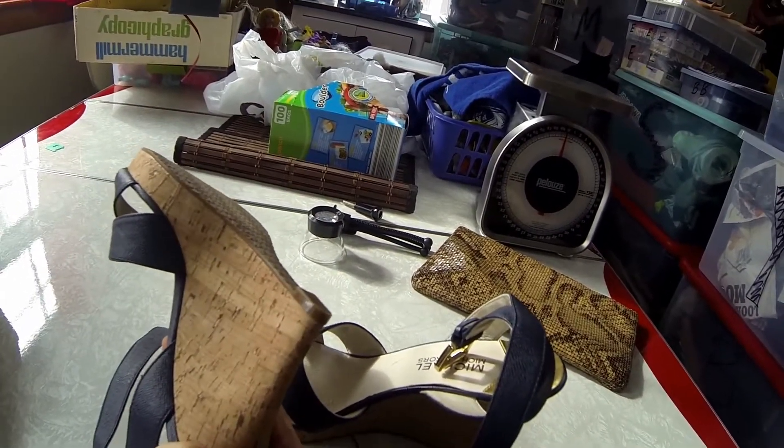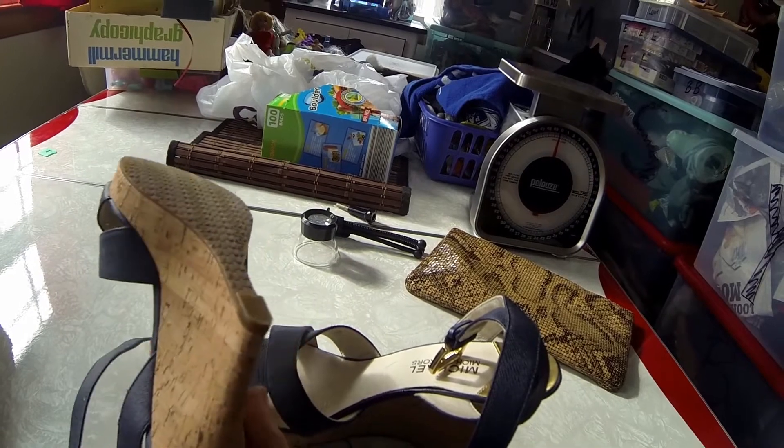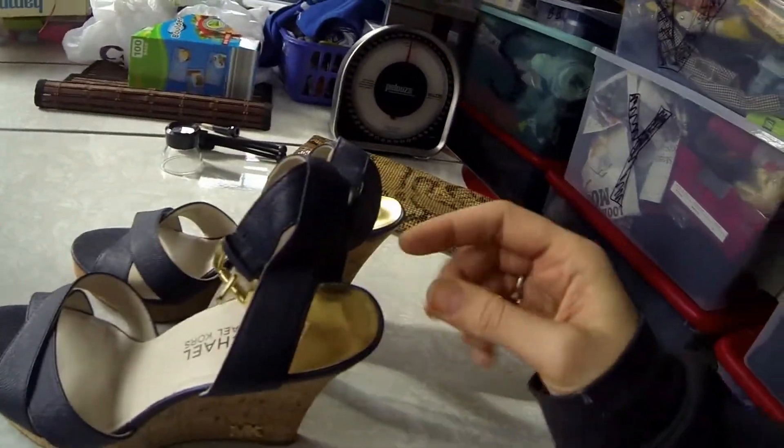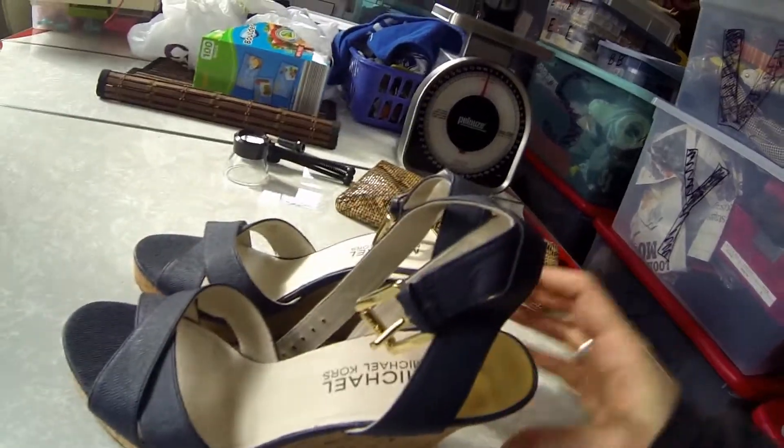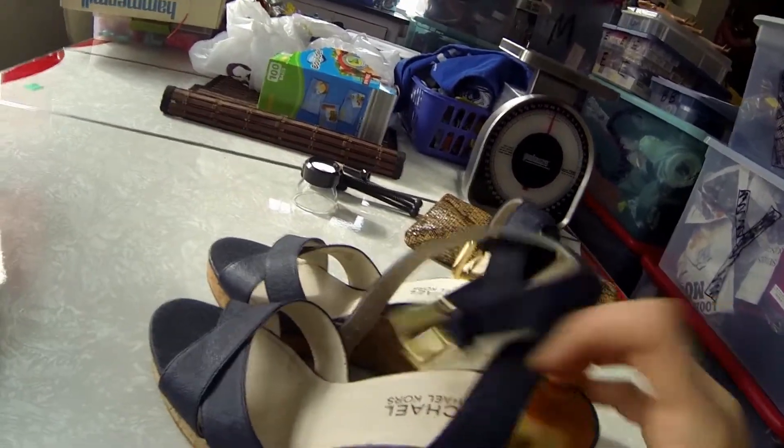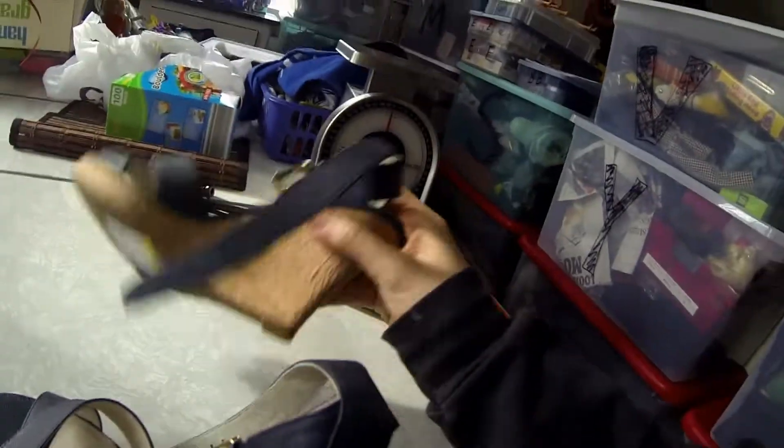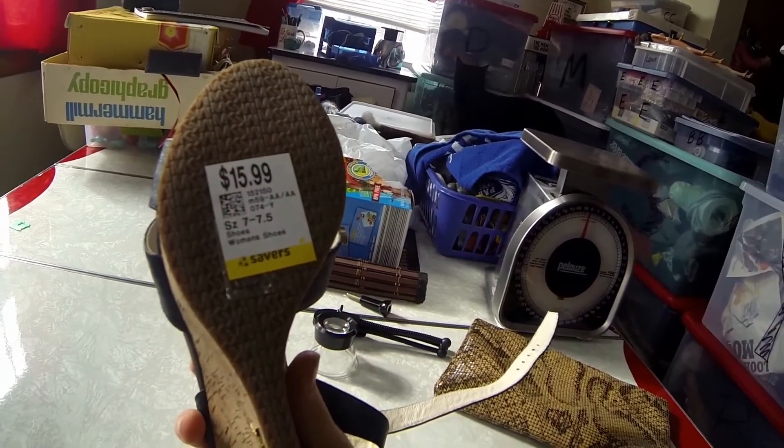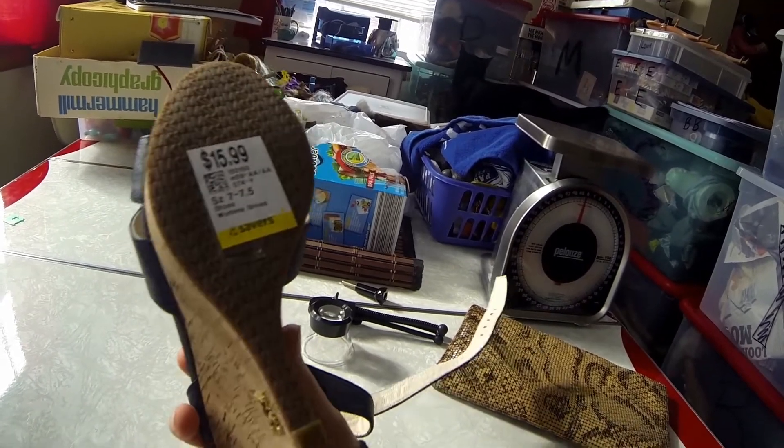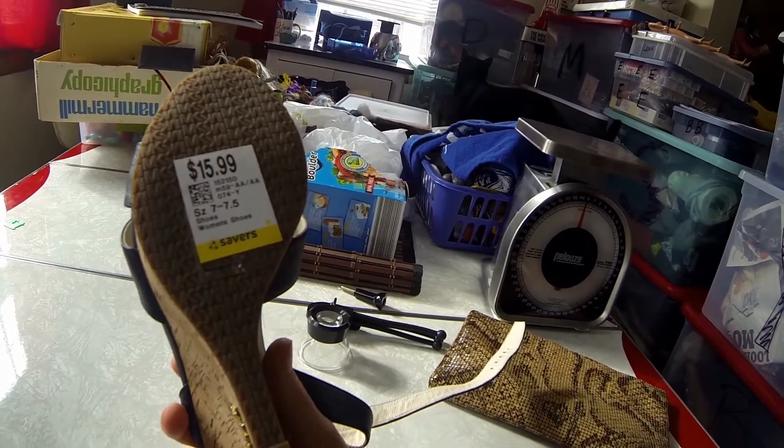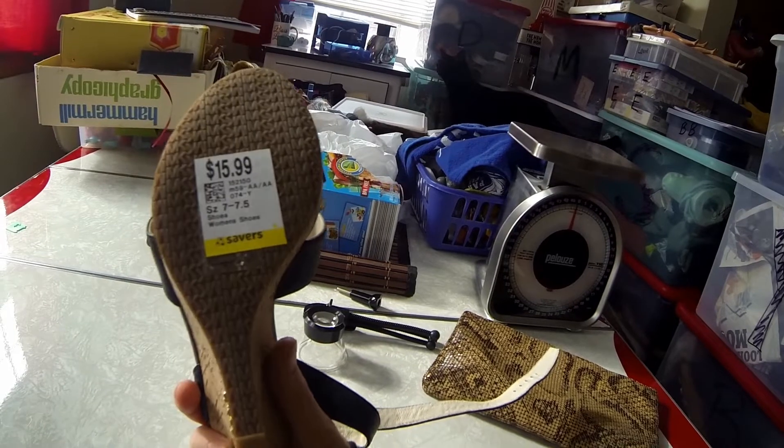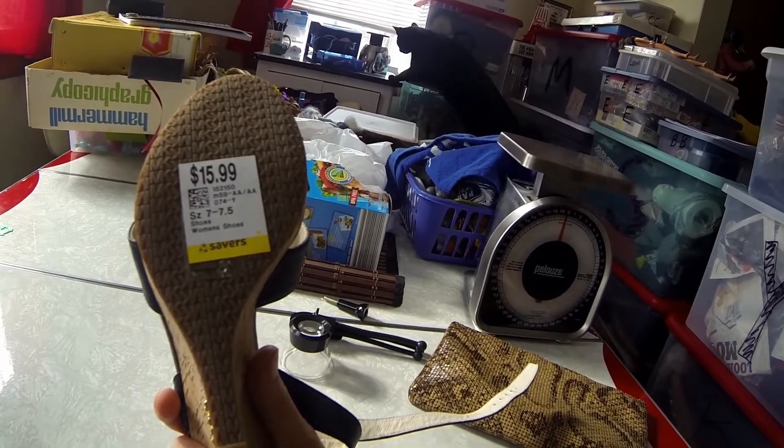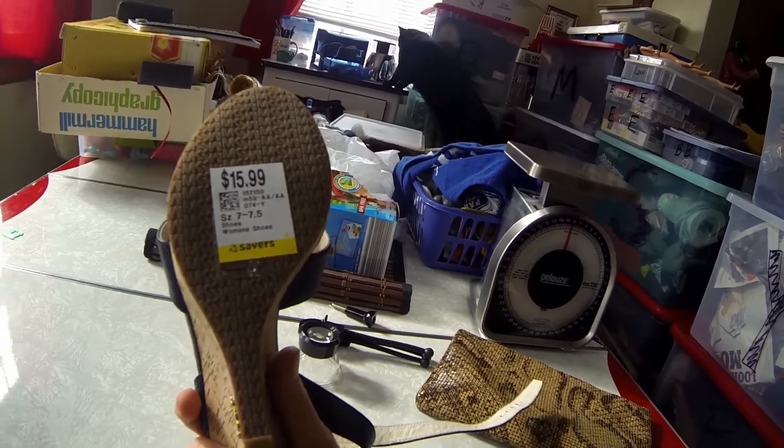So I think when I go to list them, I'll state that they're new without the box or new without the tags. However eBay words that or however Poshmark does it. But these were, I paid 50% off of $15.99. So that's like $16. So I paid about $8 for these. But I think I can get at least $25 to $35 in that range because these are like brand new.